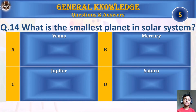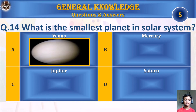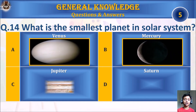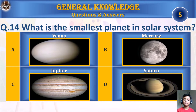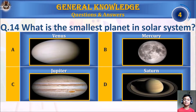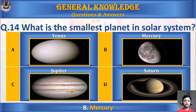Question 14: What is the smallest planet in the solar system? A. Venus, B. Mercury, C. Jupiter, or D. Saturn. Your time starts. The answer is B. Mercury.